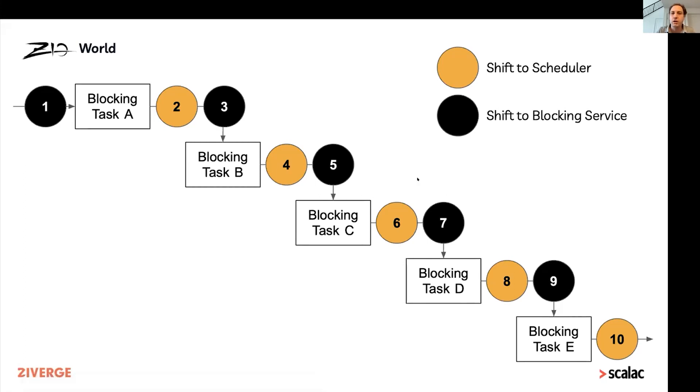And these shifts aren't free. Essentially, if we have n tasks, we're doing 2n shifts just to execute these blocking tasks.